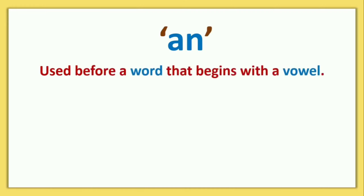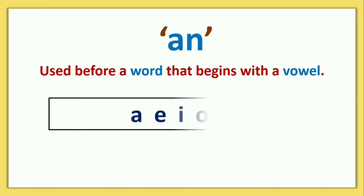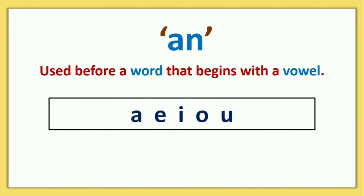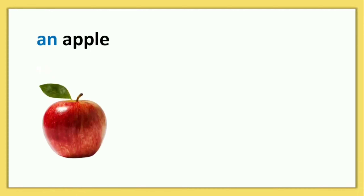AN is used before a word that begins with a vowel. A, E, I, O, U are the vowels, and the remaining letters are consonants. So when a word starts with a vowel, we use AN.